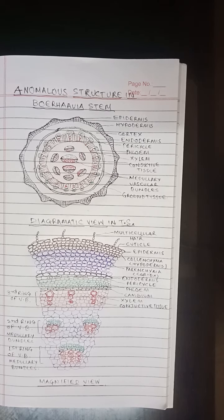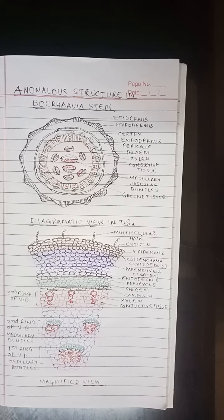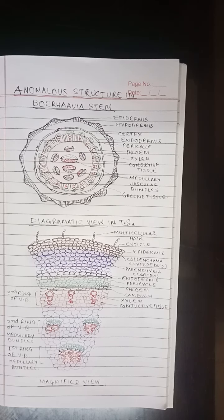The cortex is many cells in thickness and may be differentiated into two different regions: the outer hypodermis containing collenchymatous cells, and inner collenchymatous or parenchymatous cells. A few layers of collenchyma form the hypodermis, followed by loosely arranged parenchyma with intercellular spaces. The cells of this region contain chloroplasts.